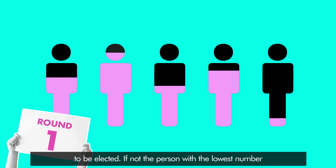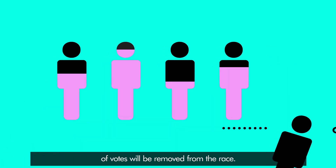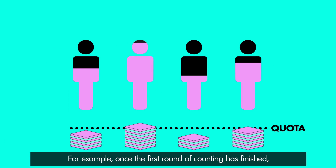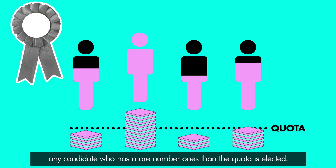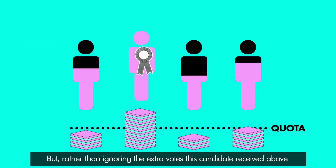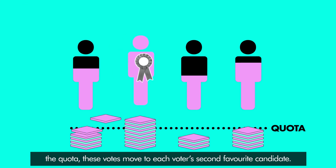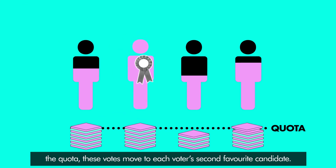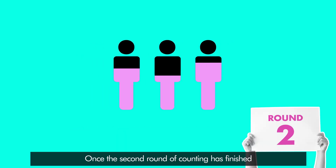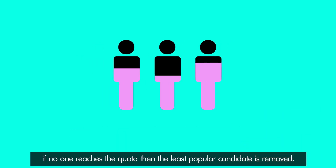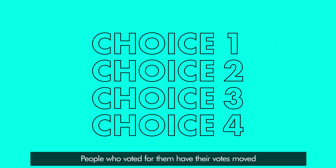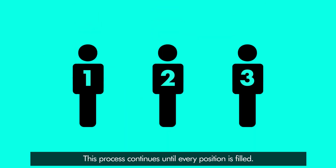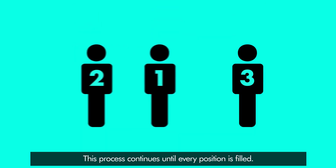If no candidate has reached the quota, the person with the lowest number of votes will be removed from the race. For example, once the first round of counting has finished, any candidate who has more number ones than the quota is elected. Rather than ignoring the extra votes this candidate received above the quota, these votes move to each voter's second favourite candidate. Once the second round of counting is finished, if no one reaches the quota, the least popular candidate is removed, and people who voted for them have their votes moved to their second favourite candidate. This process continues until every position is filled.